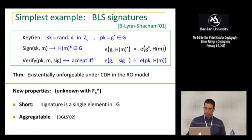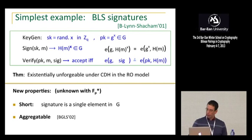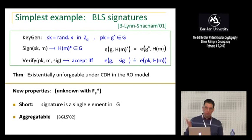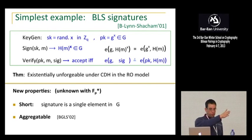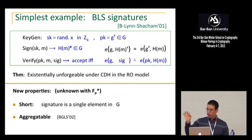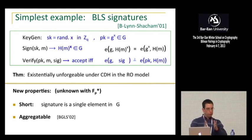In the signature scheme — I assume everybody knows what digital signatures are. Key generation is really, really simple. The secret key is basically some number X, just a value mod Q — some X in Z_Q. And the public key is just G to the X. Nothing special there, just kind of like DSA signatures. Now the way we sign is really, really simple. All we do is we use a hash function from the message space onto the source group. We hash the message, which gives us an element in the group G, and we just raise it to the power of X. Hash the message, raise to the power of X.